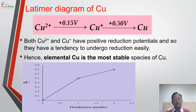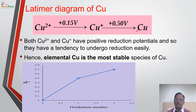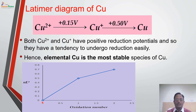Coming to the Latimer diagram of copper. Copper exists in +2, +1, and 0 oxidation states. Both reduction potentials are positive — Cu2+ has a strong tendency to get converted to Cu+ and Cu+ also has a strong tendency to get converted to elemental copper. This means elemental copper is the most stable species, as shown by the Frost diagram — the 0 oxidation state has the minimum value of N × E0, making it the most stable species of copper.